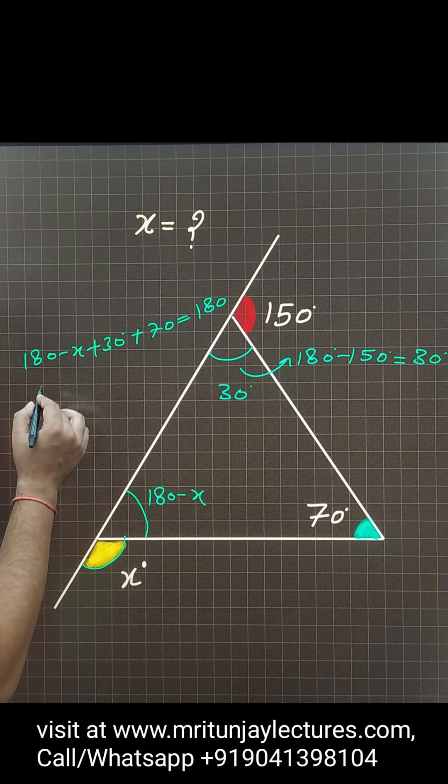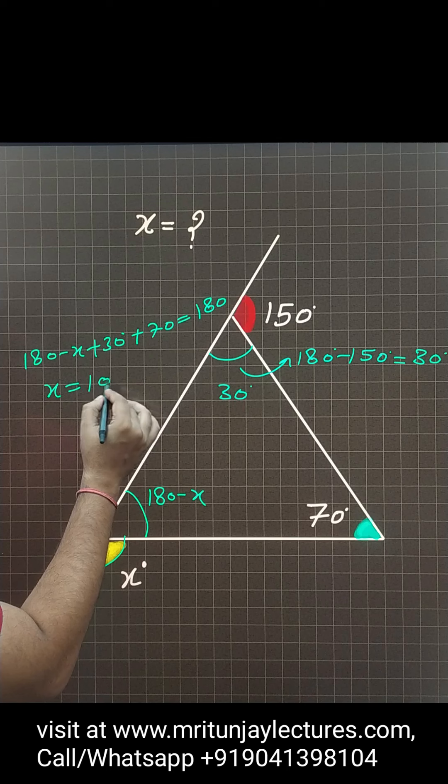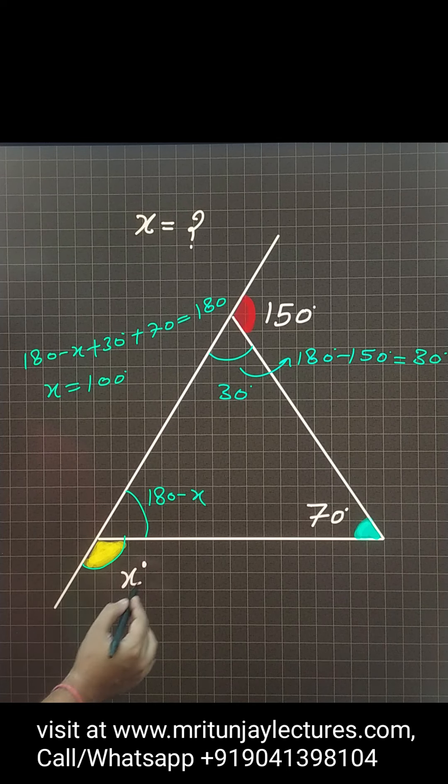So what about x? x is how much? 70 plus 30, that is 100 degrees. So that one is 100.